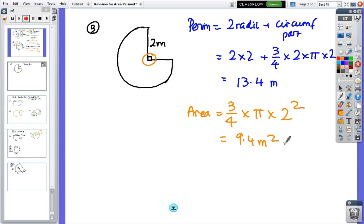And the area, we've got three quarters of a circle times pi times radius squared, and just check down the calculator in one step, it should be about nine, yes, nine point four meters squared. So, be ready for parts of a circle.